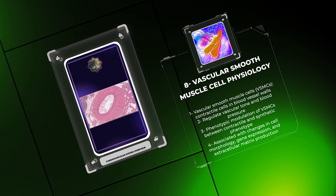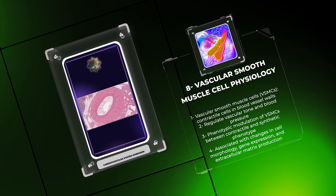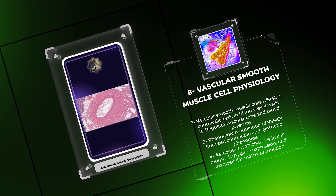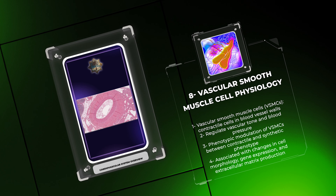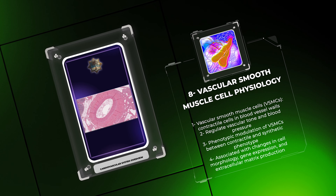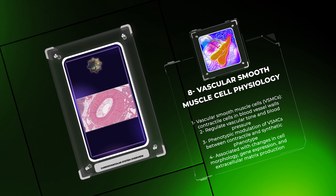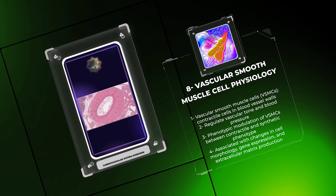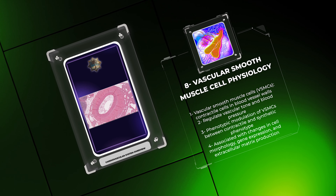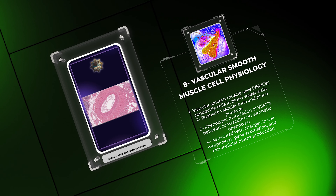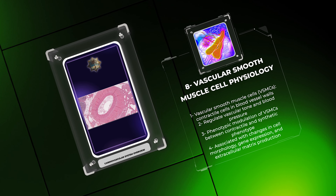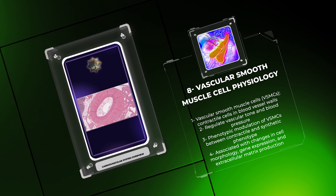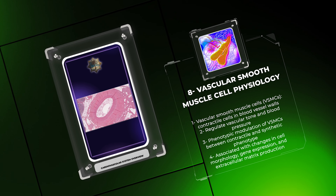Vascular smooth muscle cells (VSMCs) are contractile cells found in the walls of blood vessels, playing a crucial role in regulating vascular tone and blood pressure. VSMCs can undergo phenotypic modulation, transitioning between a contractile and a synthetic phenotype. This switch is associated with changes in cell morphology, gene expression, and production of extracellular matrix components. Dysregulation of VSMC function contributes to vascular diseases such as atherosclerosis and restenosis.